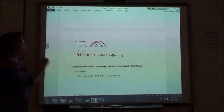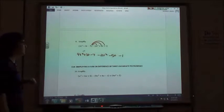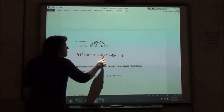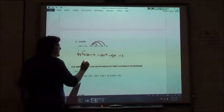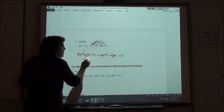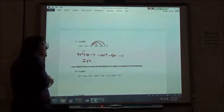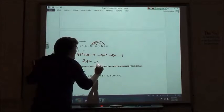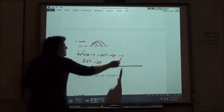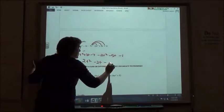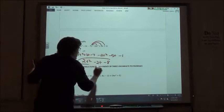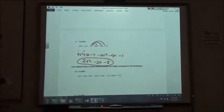And now, I'm going to combine my like terms. So, 4t squared minus 2t squared is 2t squared, 3t minus 5t, negative 2t, and negative 7 minus 1, negative 8. So, 2t squared minus 2t minus 8.